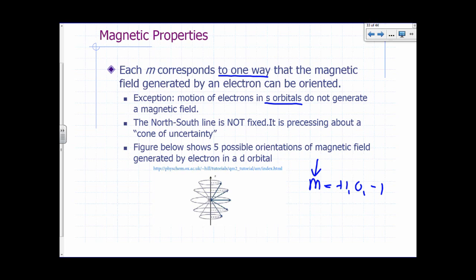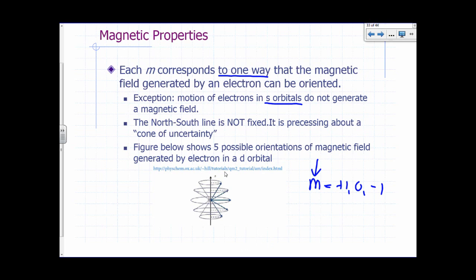For a 3D orbital, there are five different ways that the magnetism can be oriented — corresponding to M values of negative 2, negative 1, 0, plus 1, and plus 2. Notice that the north-south line of the magnetism is not really fixed; this arrow can be anywhere on a cone of uncertainty — we say it's precessing about that cone. What we do know is that for a particular M value, the angle between the Z-axis and the magnetic field from the electron has a well-defined angle, even though we don't know exactly where on the cone it's pointing.